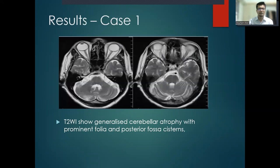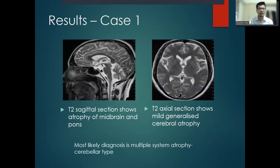Case 1: T2-weighted images show generalized cerebellar atrophy with prominent folia and posterior fossa cisterns. T2 sagittal section shows atrophy of midbrain and pons. T2 axial section shows mild generalized cerebral atrophy. The most likely diagnosis is multiple-system atrophy, cerebellar type.